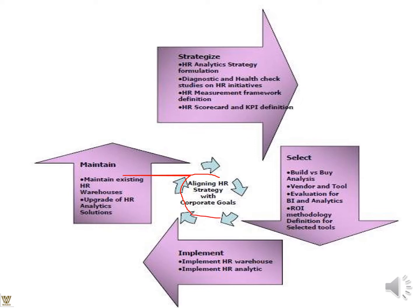We are talking about aligning HR strategy with corporate goals. First, define the HR analytics strategy and which software you will use. Decide the fundamental reports you will bank upon — the health checkup metrics vital to your organization's survival in the industry. Define the HR scorecard and KPI definitions. Key performance indicators vary from industry to industry and company to company. Then comes analysis of whether you want to build or buy. Consider vendor basis, tool basis, business intelligence, analytics, and return on investment.